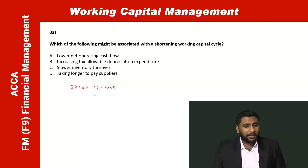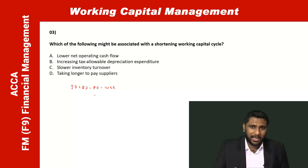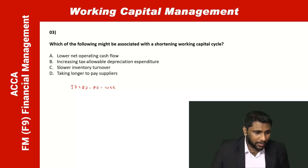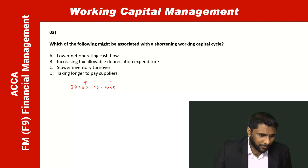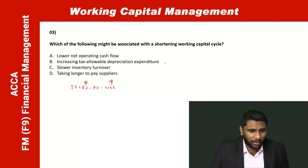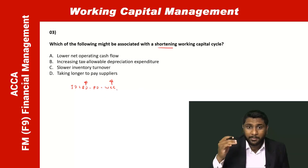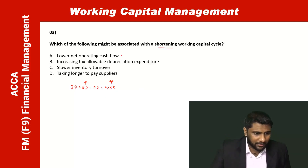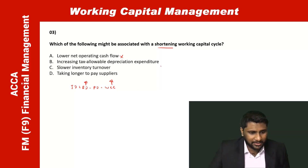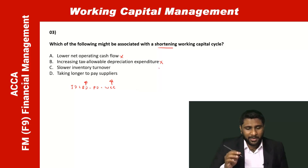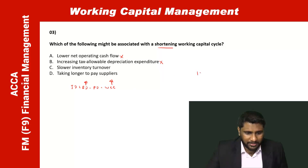Option: lower net operating cash flows — if you reduce operating cash flows, credit flows increase, receivable days go up, and the working capital cycle increases rather than shortens, so that's wrong. Increasing tax-allowable depreciation expenditure has no connection to the working capital cycle, so that's also wrong.